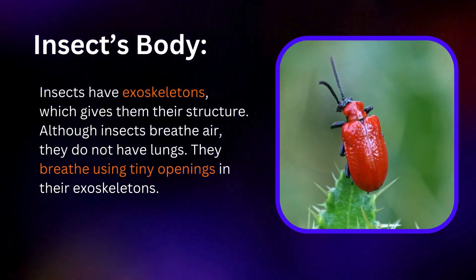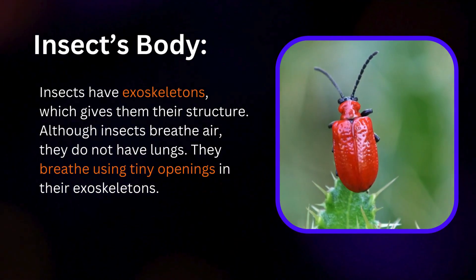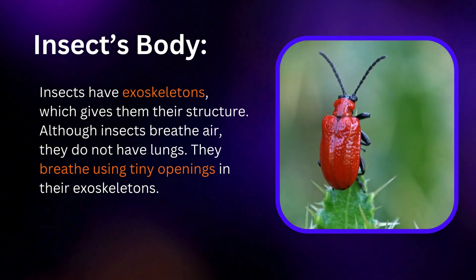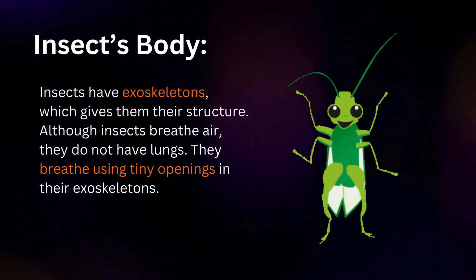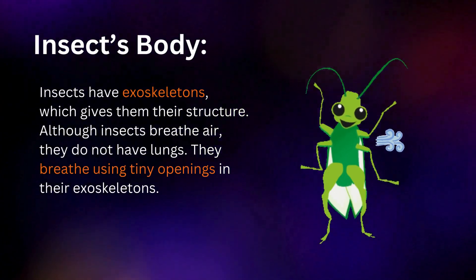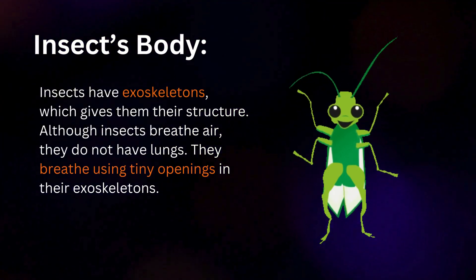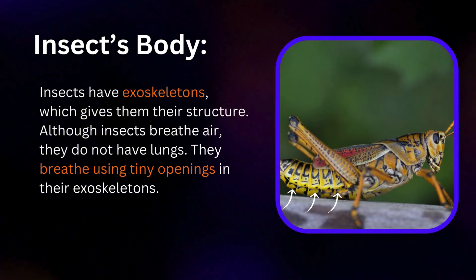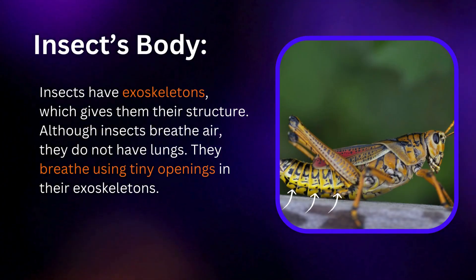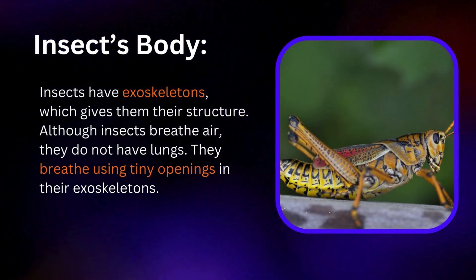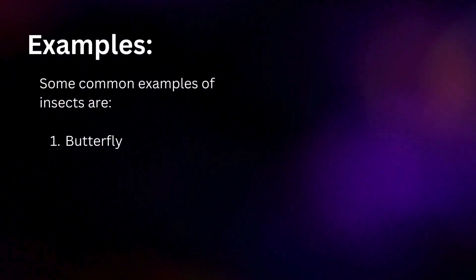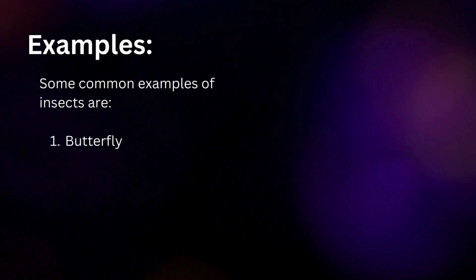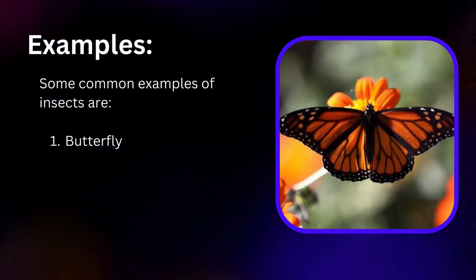Insects have exoskeletons, which gives them their structure. Although insects breathe air, they do not have lungs. They breathe using tiny openings in their exoskeletons. Some common examples of insects are butterfly,